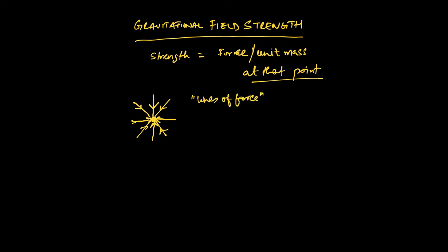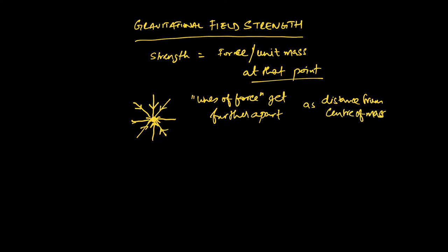These lines of force are getting further apart as you go farther away from the center of mass. Hopefully that makes sense — this field is radial. These lines of force are quite close together near the surface, but they're much farther apart at greater distances. So this is what we mean by the gravitational strength of a field being different at different points, depending on how far away you are from the source of the gravitational field.